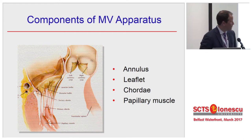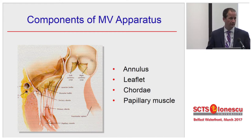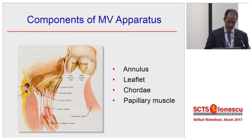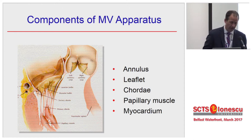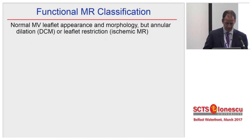The mitral valve is composed of four main components: the annulus, the leaflets, the cordae, and the papillary muscle. But also an important component that's often overlooked is the surrounding myocardium around the papillary muscle.